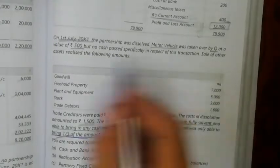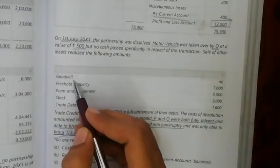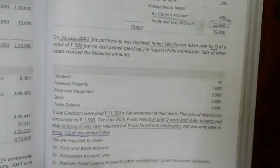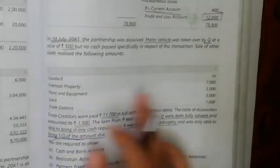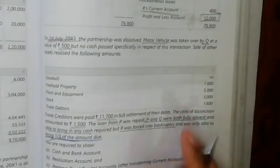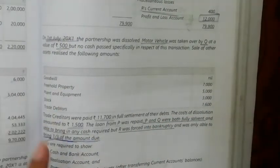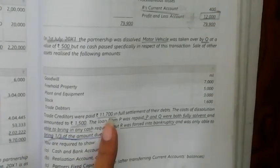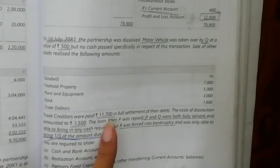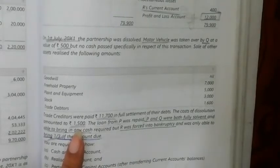Sale of other assets realized the following amounts: goodwill realized nil. Freehold property realized 7,000. Trade creditors were paid 11,700 in full settlement. Cost of dissolution amounted to 1,500.